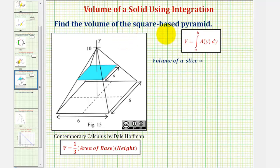We want to find the volume of the square base pyramid given here using integration. We could use the basic volume formula for a pyramid, where the volume is equal to one-third times the area of the base times the height. Let's go ahead and do this and see if we can get the same results using integration.